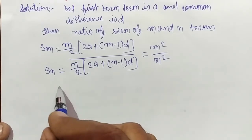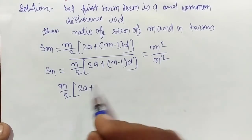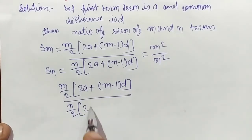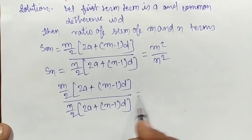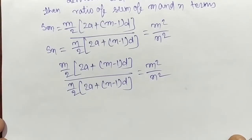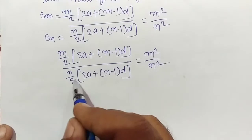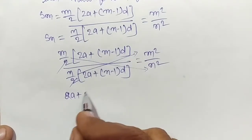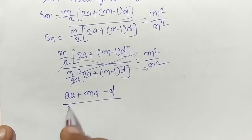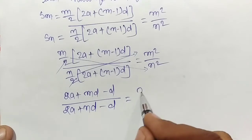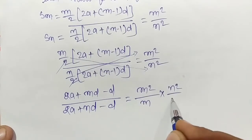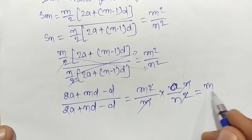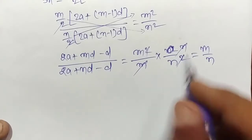So this becomes: [m/2 × (2a + (m-1)d)] / [n/2 × (2a + (n-1)d)] = m²/n². The 2s cancel, then we do cross multiplication — m goes to the other side, n goes to the other side — and we get (2a + (m-1)d) / (2a + (n-1)d) = m/n.